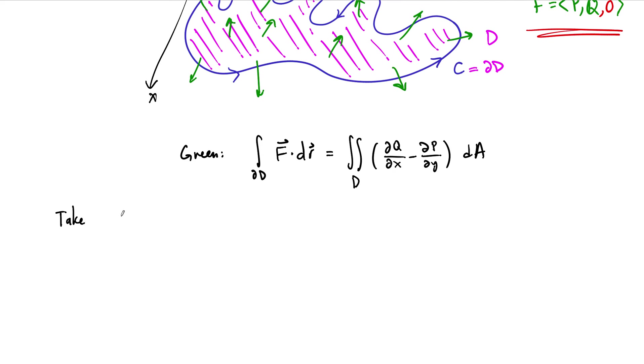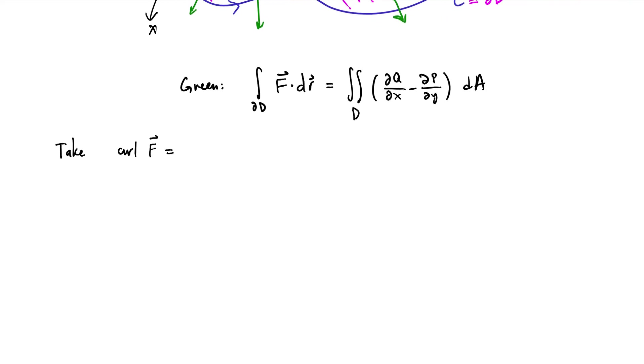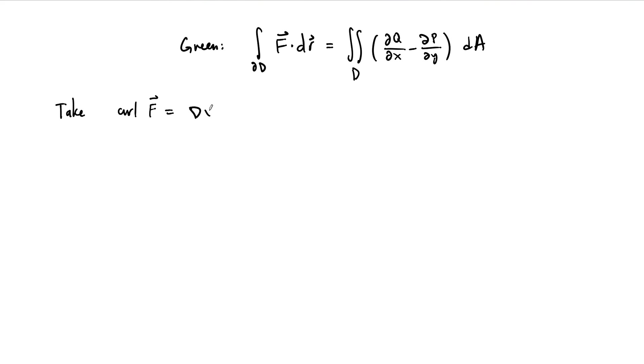So let's do it. Let's take the curl of this vector field F. Remember how this works. The curl is a formal cross product of the gradient vector, or the del operator you might say, with F. And it's done as a formal cross product. So i, j, k, partial derivative operators dx, dy, dz, and then our components of our vector field are now P, Q, zero.